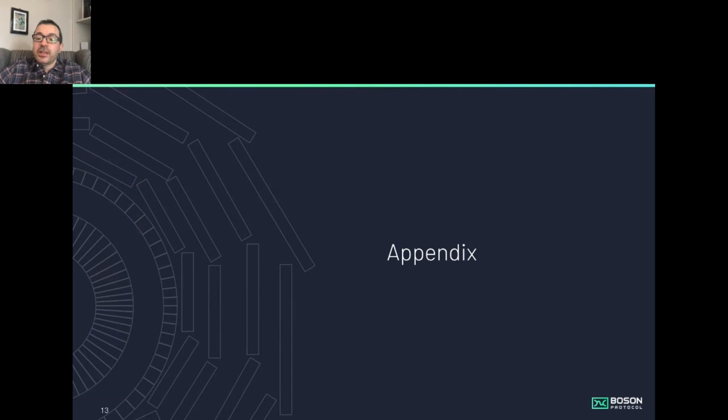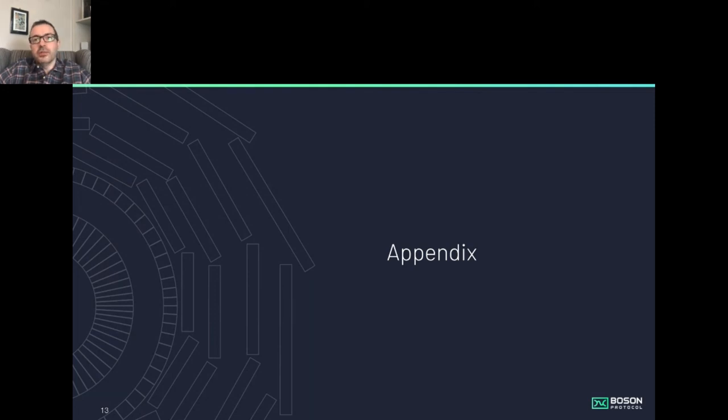Question: Does the protocol have a native token? Yes, the protocol has a native token, not surprisingly called Boson. The purpose of Boson is coordinating the ecosystem, accruing value for coordinating commercial transactions, and also value from monetizing the data from those transactions and then recycling that within the ecosystem.